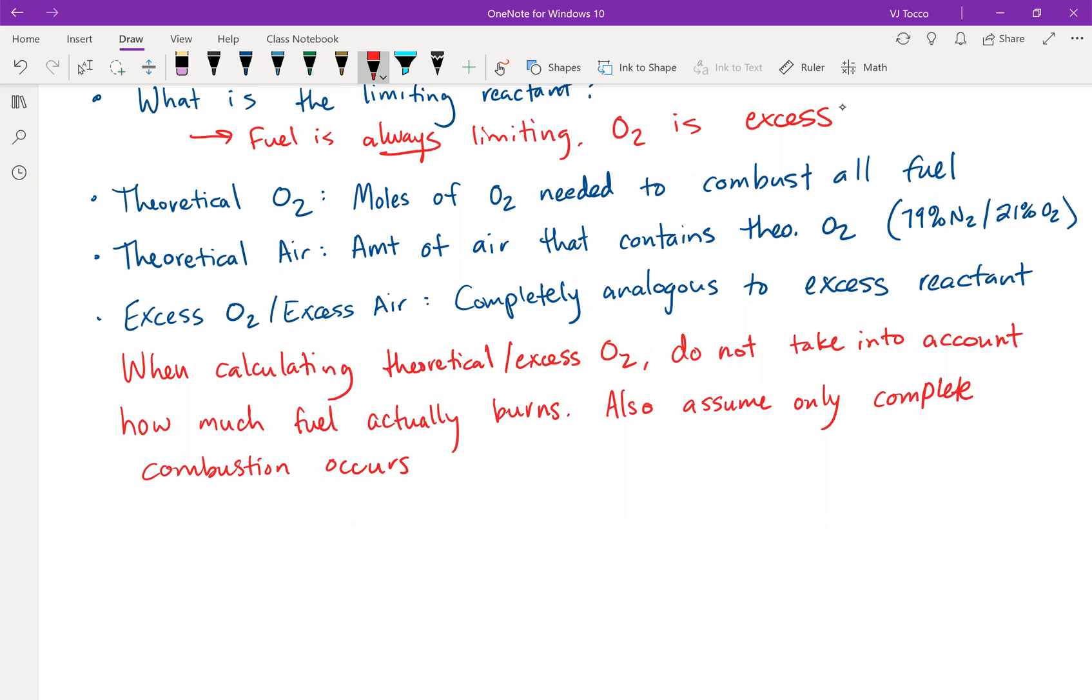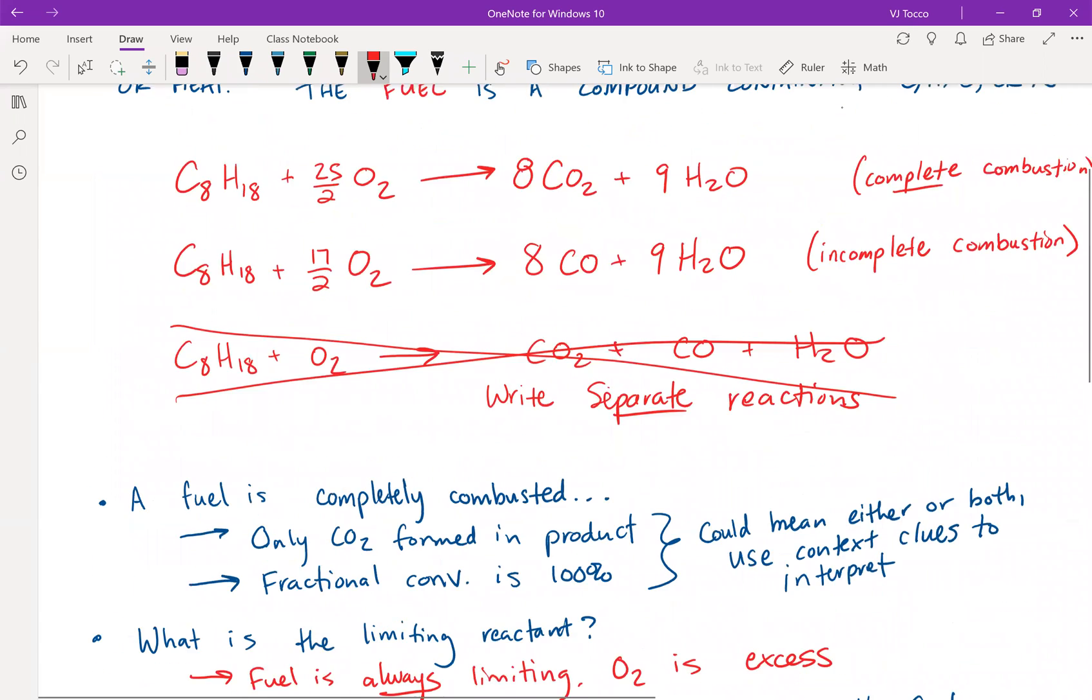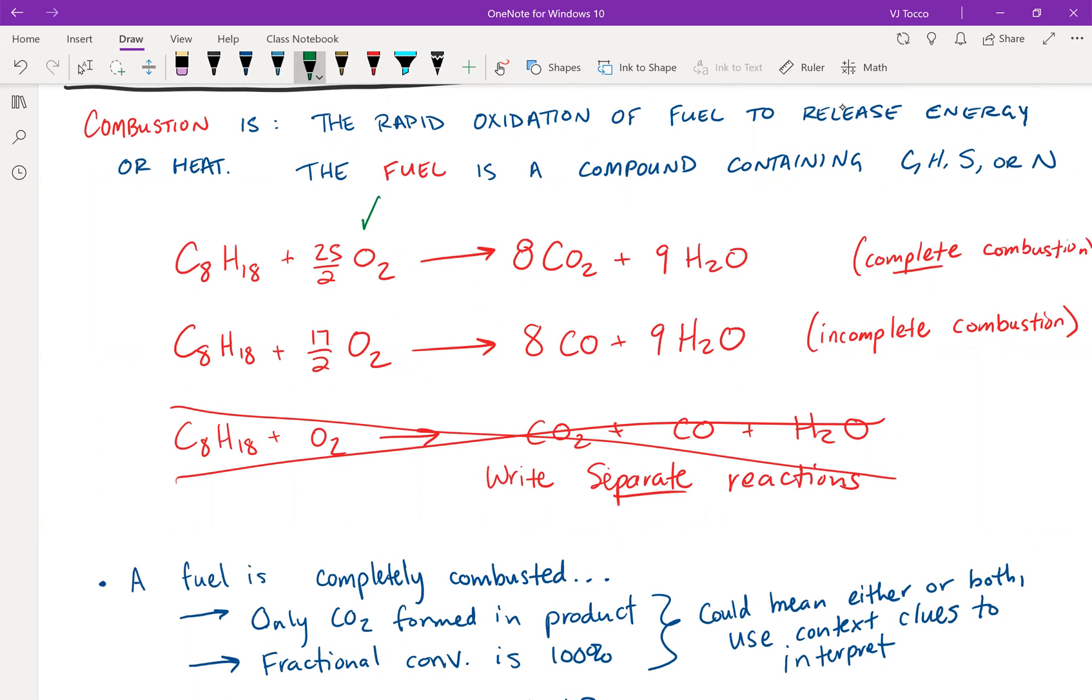Very importantly, when you're calculating how much theoretical or excess O2 you have, you should not take into account how much fuel actually burns, and you should also assume only complete combustion occurs. The complete version needs more O2 than the incomplete version. When I'm calculating theoretical O2, I'm multiplying the molar flow rate of octane by 25 over 2, not 17 over 2. My theoretical O2 is still 12.5 times 100, not 12.5 times just the 80 of the octane that burns.